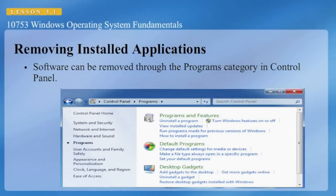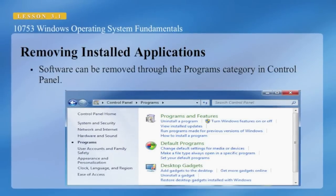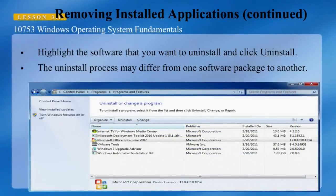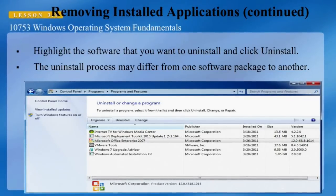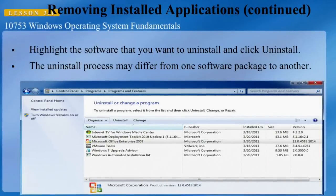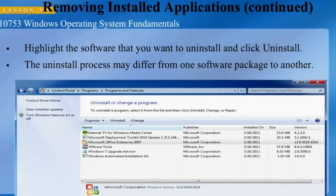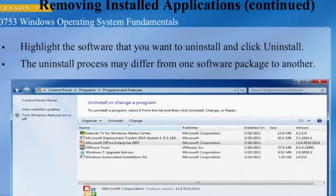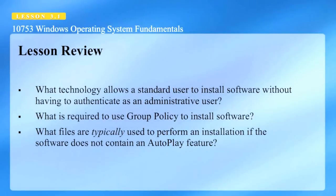On the local computer, software can be removed through the Programs category in Control Panel. From the Programs category, select Programs and Features, highlight the software you want to uninstall, and click Uninstall. The uninstall process may differ from one software package to another. It should be noted that some software applications leave residual files and registry entries behind, and caution should be used when removing these.